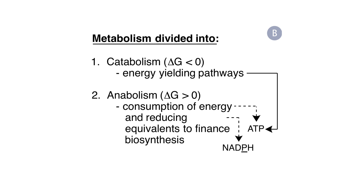In panel B, biochemists divide metabolism into two subcategories: catabolism and anabolism. Catabolism consists of the energy-yielding pathways, and anabolism is essentially biosynthesis. We use the free energy generated through catabolism in order to assemble complex molecules by way of anabolism.